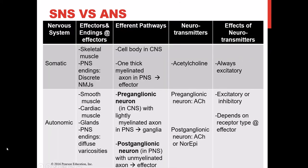For the somatic nervous system, the effectors are skeletal muscle, and the axon terminals end at very discrete neuromuscular junctions — one axon terminal per one skeletal muscle fiber. The effectors for the autonomic nervous system are smooth muscle, cardiac muscle, and glandular tissues — both endocrine and exocrine glands like sweat glands. Their endings are not discrete neuromuscular junctions but diffuse junctions called varicosities, where neurotransmitters are spread out among many cells.